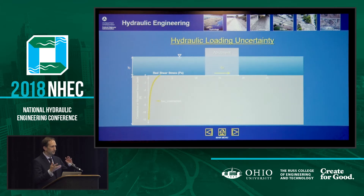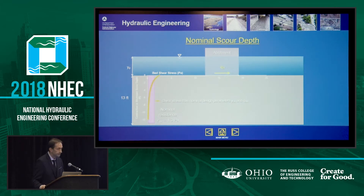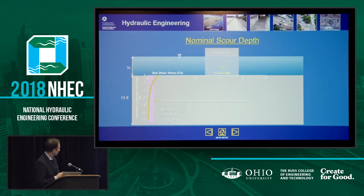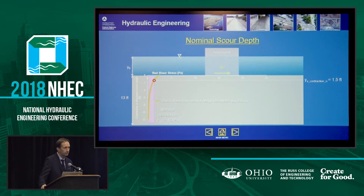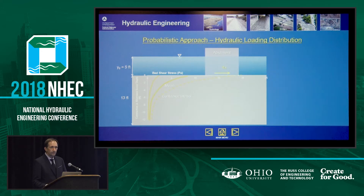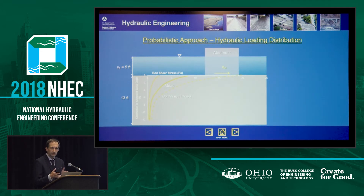Looking at this probabilistically: the decay function has uncertainty, so it has confidence limits. At the top layer, there's more uncertainty because of large flow fluctuations. As scour forms, the flow becomes more confined, so the fluctuations of the load taper off — and so do the confidence limits. If you take a slice through one of these depths, the distribution is relatively flat due to higher uncertainty. At lower elevations, the variation is less.